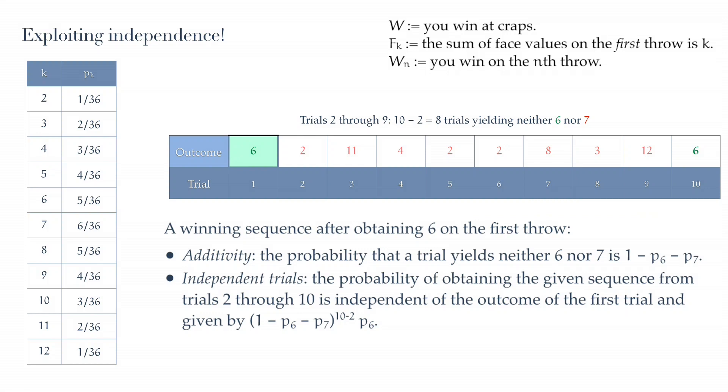The trials are independent, and therefore we simply multiply the probabilities. There are 10 minus 2, or 8 intervening cases, each with probability 1 minus P6 minus P7, and a final trial yielding a 6 with probability P6. We simply multiply all of them out, and we get 1 minus P6 minus P7 to the power 8 times P6. This is the probability of the sequence with trials 2 through 10 in the picture.